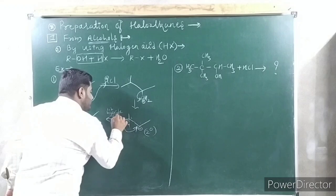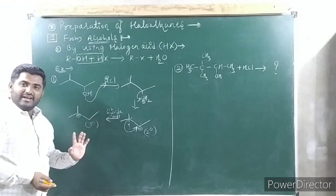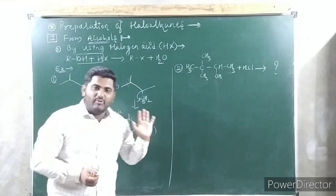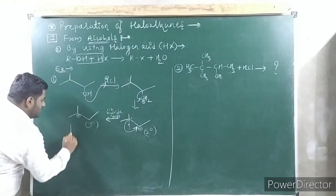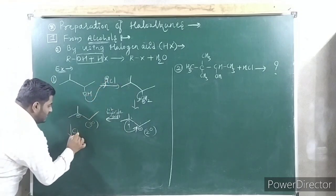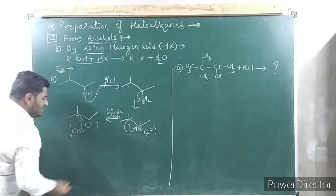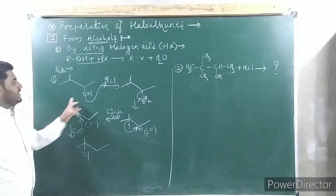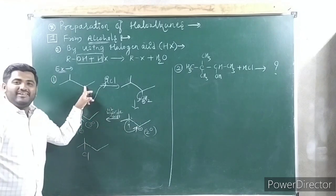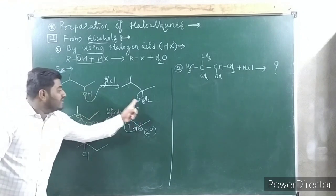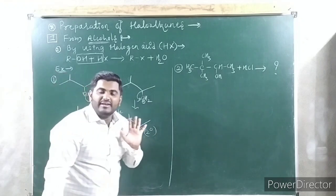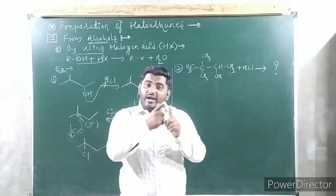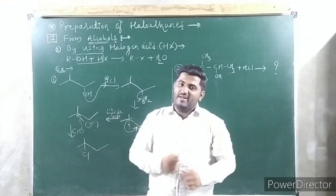This is called a hydride shift — why? To make a stable carbocation. So if possible, go for rearrangement. Halogen (Cl⁻) is then going to attack at the new carbocation position. If you went for the direct method, Cl would be at the original position — that is wrong because of the rearrangement.